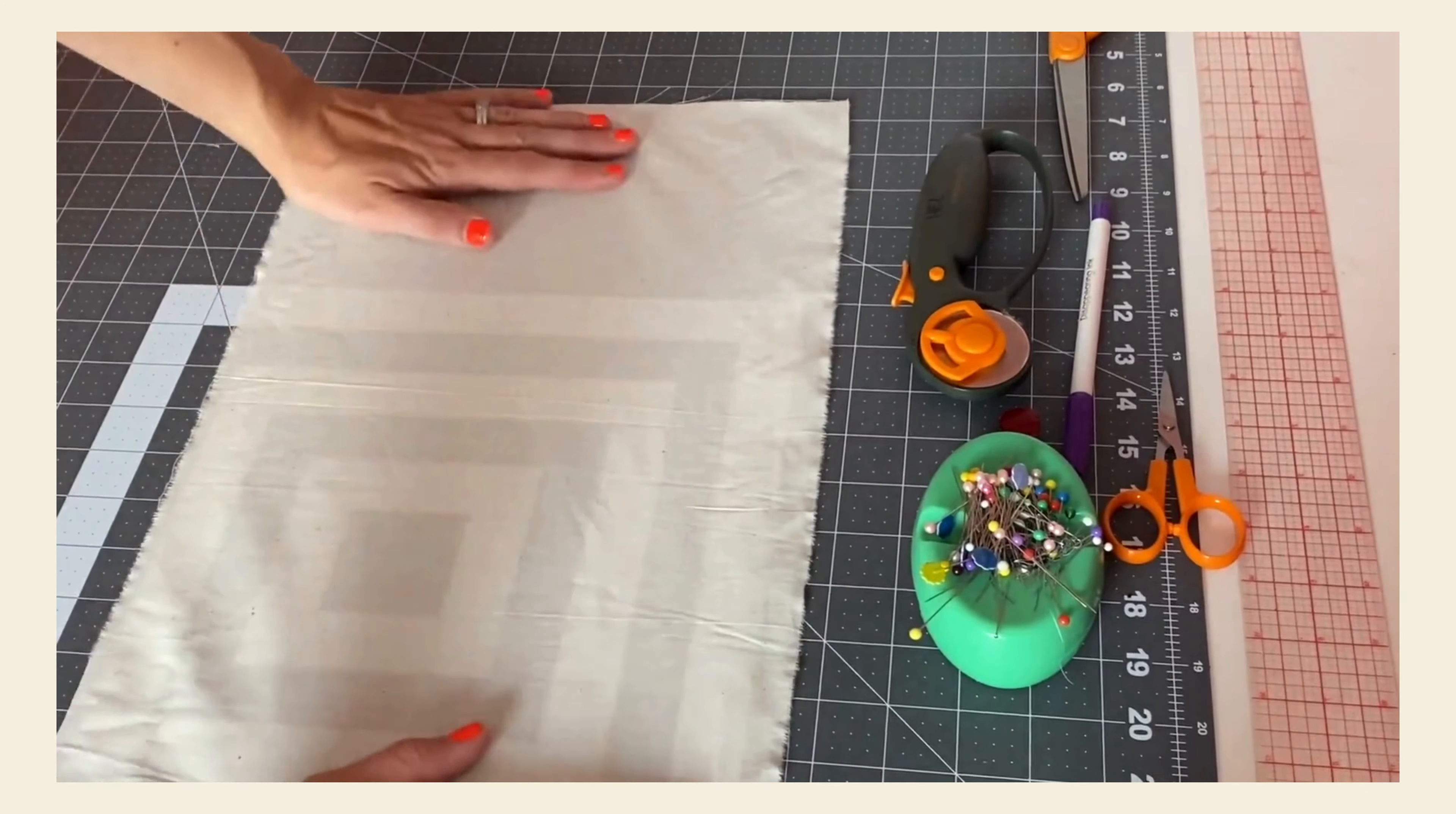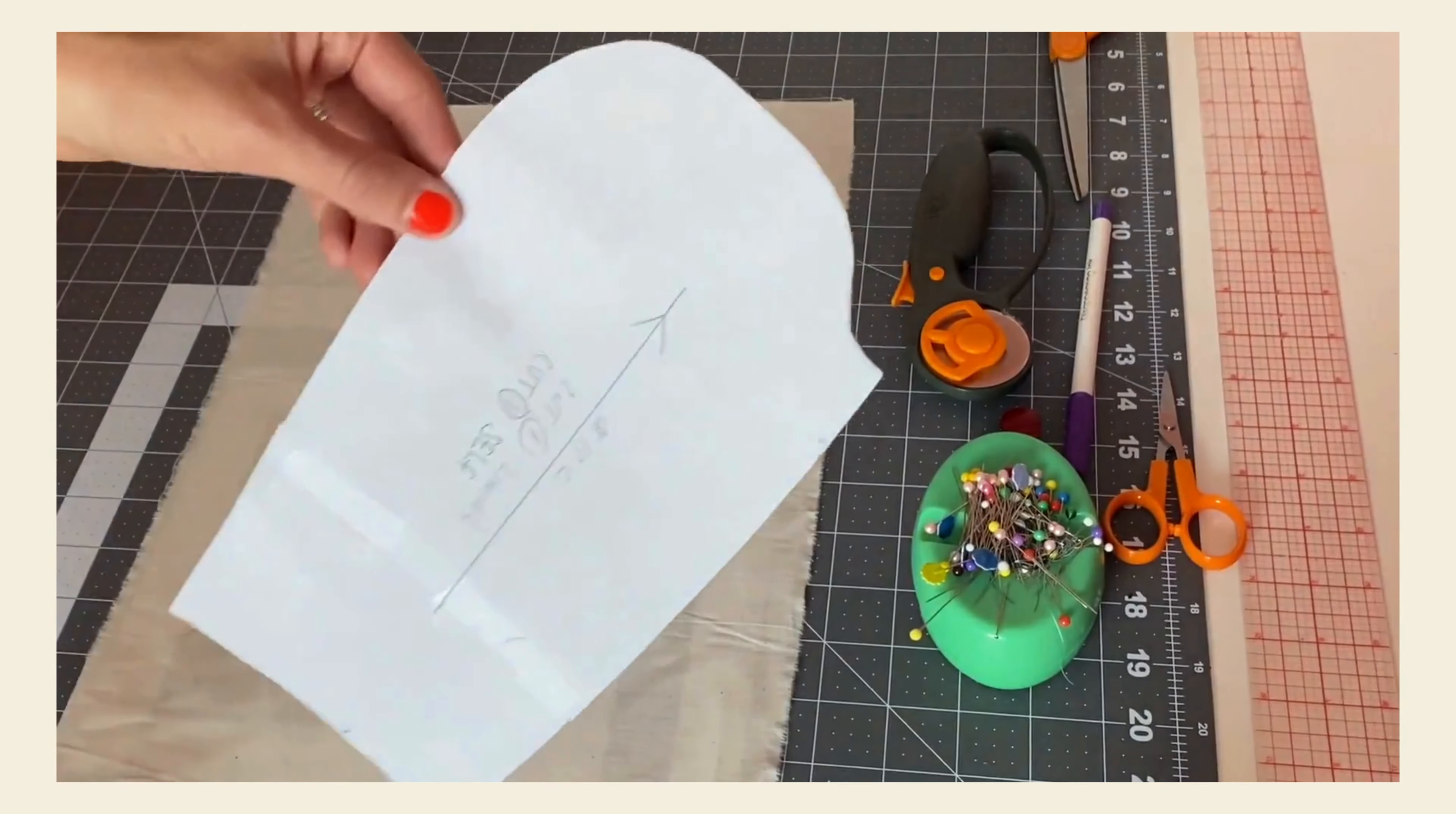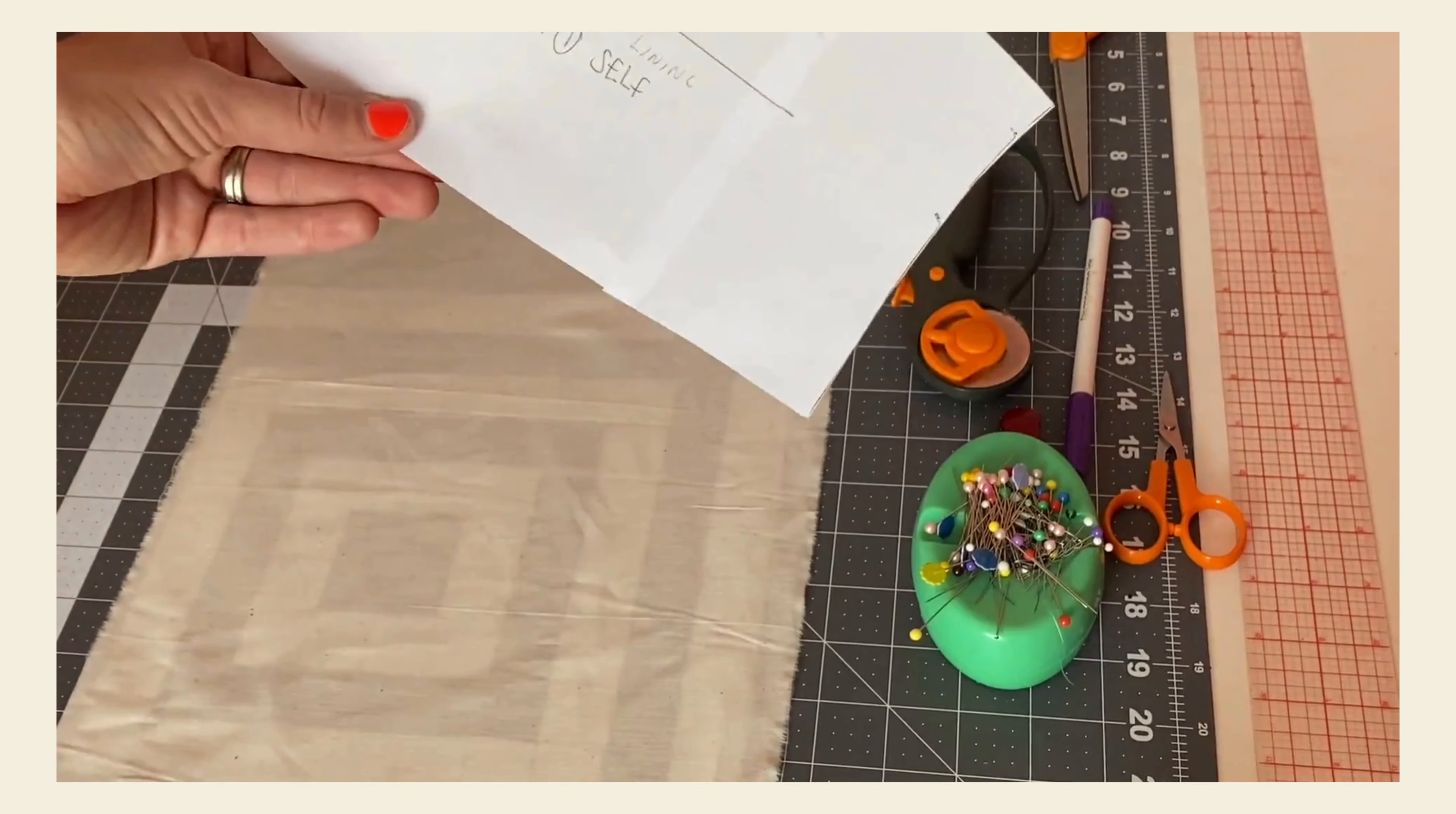As you can see, I have a nice large cutting mat, lots of room to cut out my fabric, which is key, and lay it nice and flat. I have all the tools that I'll need for cutting handy, as well as this pattern piece. I chose a simple pattern piece for this first demonstration and cutting it out.